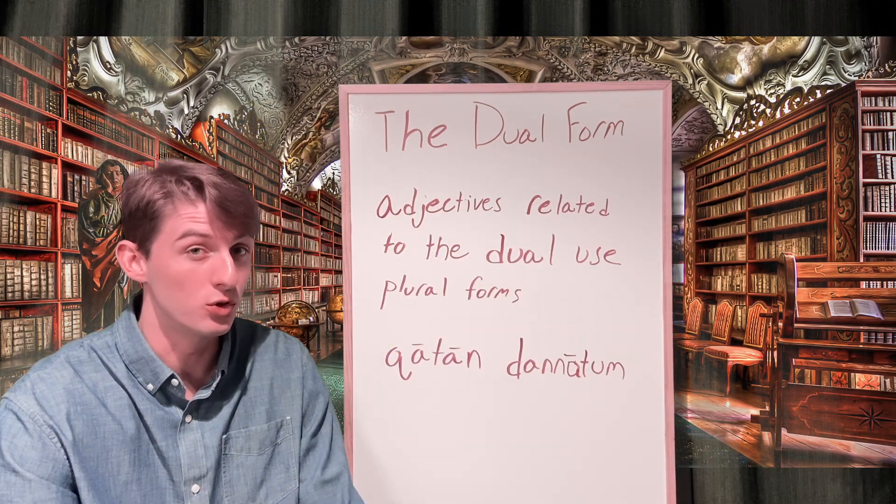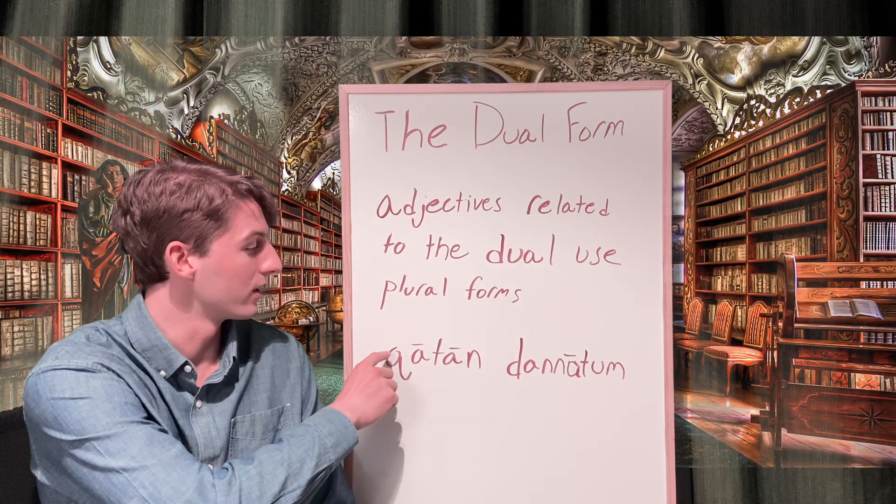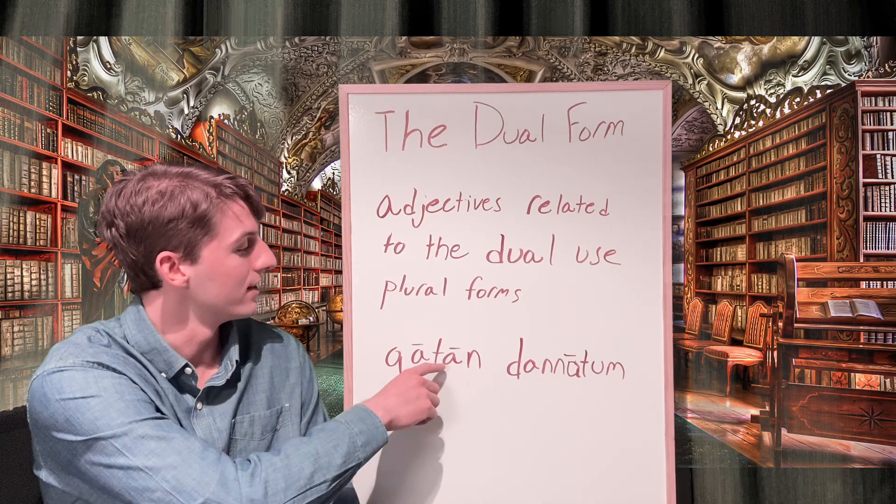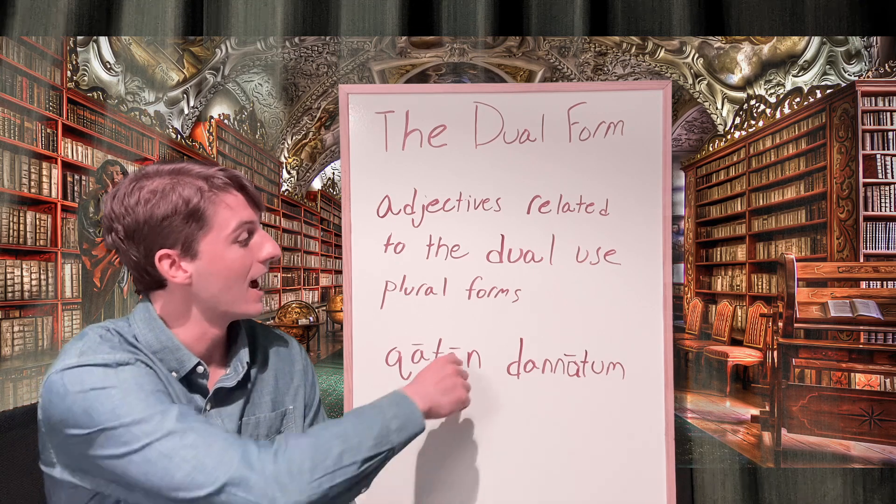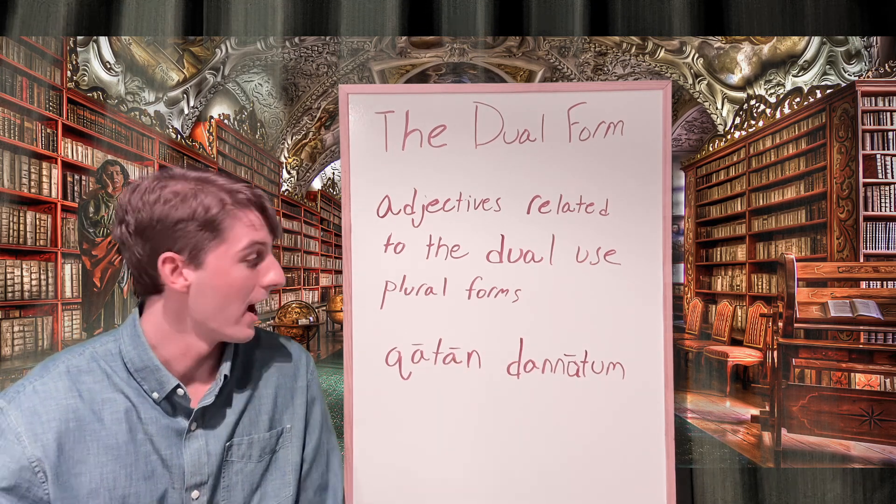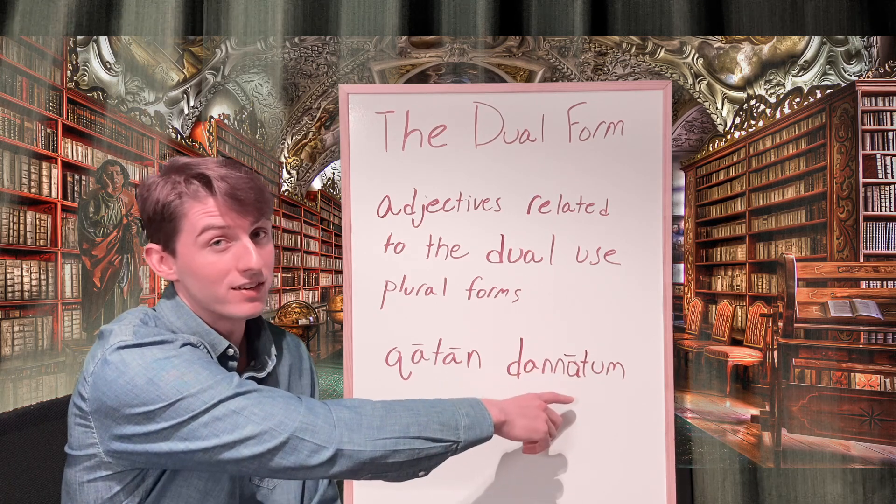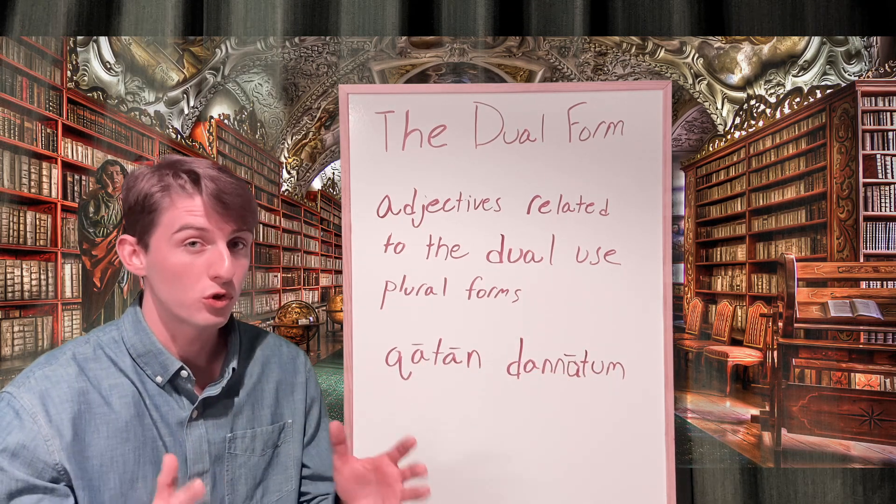Adjectives which are related to dual nouns are going to use plural endings. Here I have an example using the word katan, which means hand, and it's a feminine noun with the nominative dual case ending. Our adjective is danum, which means strong. In order to make this agree, we're going to use a feminine plural nominative ending to get katan danatum, or two strong hands.